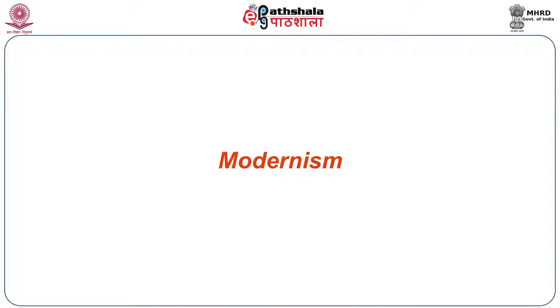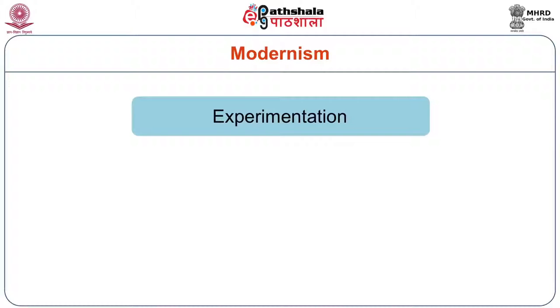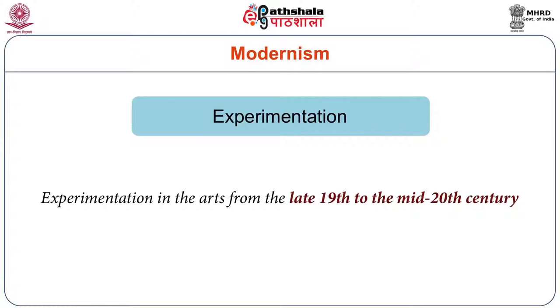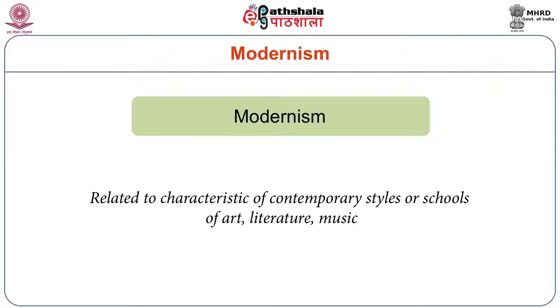When we talk about modernism, we need to be aware that it was experimentation — experimentation in the arts from the late 19th to the mid 20th century. Like any movement, it also had a lifespan: from the late 19th century to the mid 20th century. Modernism has to do with the characteristics of what was then regarded as contemporary styles, schools of art, literature, and music — in other words, all the realms of human expressivity.